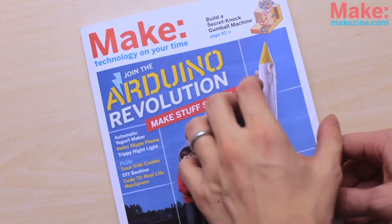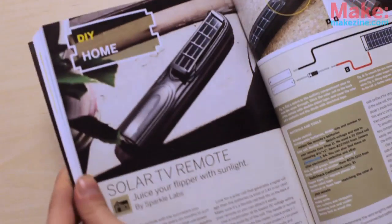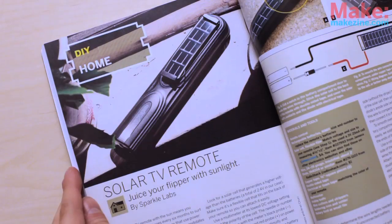In Make Volume 25, you'll find the Solar TV remote project, which shows you how to mod your remote control so that the batteries charge when it's lying in the sun.